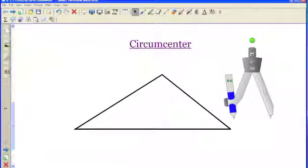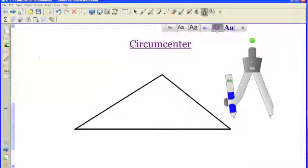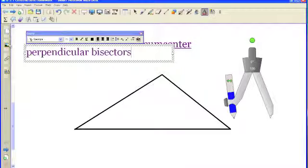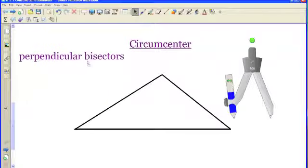today we're doing a circumcenter, and a circumcenter is found by creating three perpendicular bisectors of a triangle. And perpendicular bisectors really aren't that difficult to create.